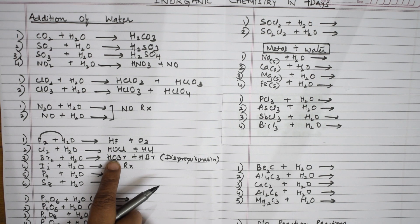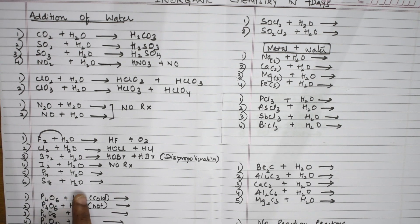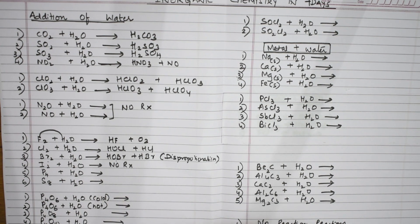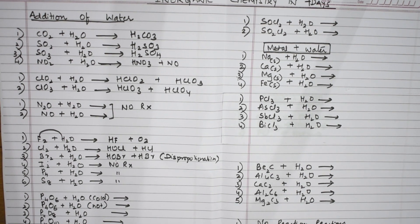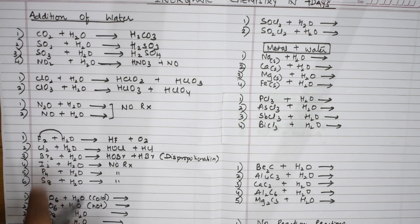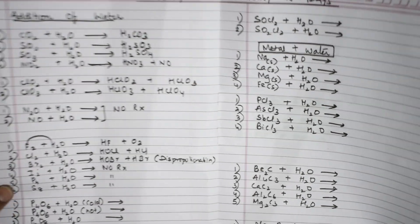HOCl is called hypochlorite and HOBr is called hypobromite. For S8 plus water and P4 plus water, there is no reaction. Under special conditions, certain compounds will show products. So the set of reactions for fluorine, bromine, and iodine with water is now clear.